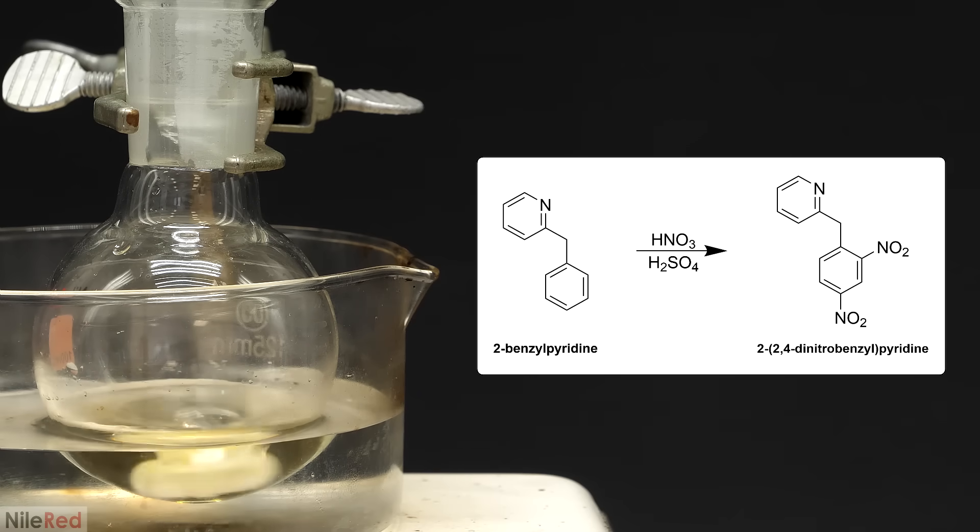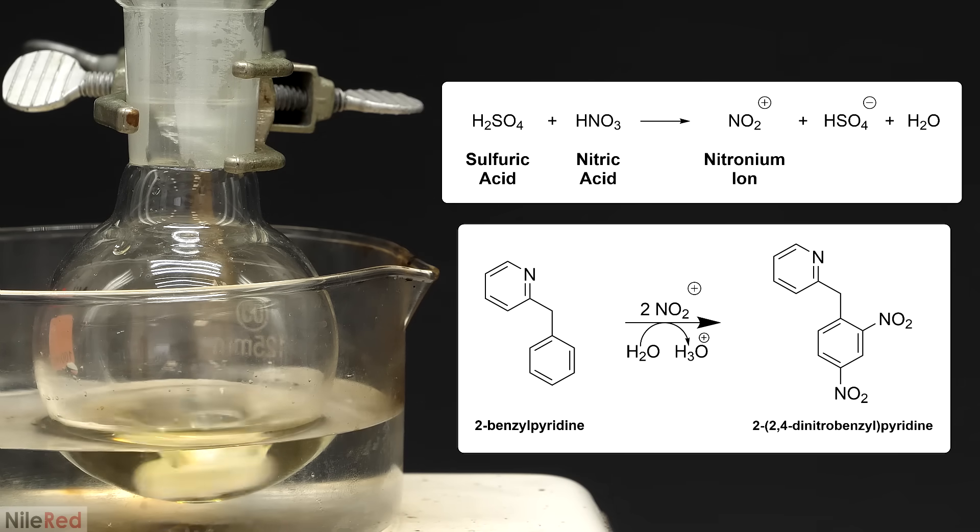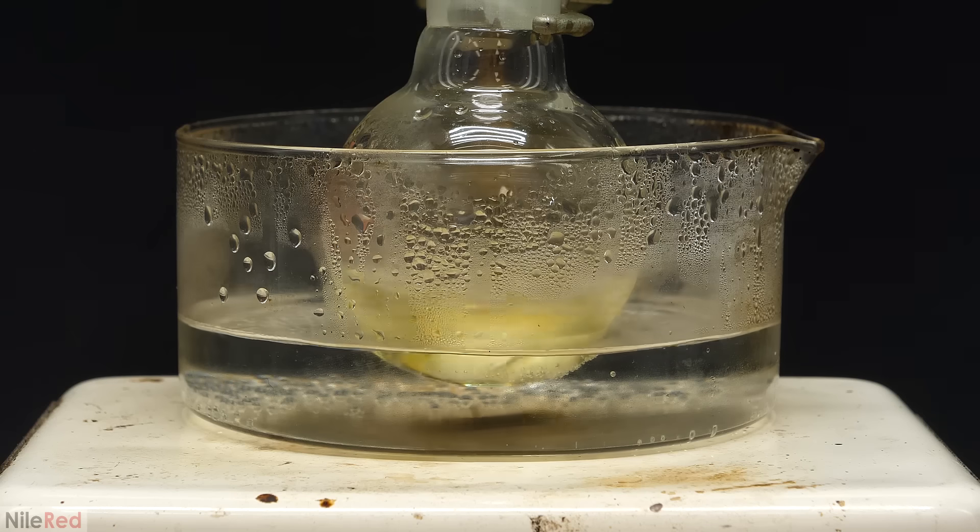What was going on here was a nitration reaction, where 2 nitro groups were being added to the 2-benzalpyridine to make DNBP. In a bit more detail, the first step was a reaction between the sulfuric and nitric acid to make nitronium ions. These were the active nitrating species, and they were attacked by the 2-benzalpyridine. Under these conditions, DNBP was the major product, but I'm sure that to a certain extent other nitrated forms were also made. These just had to be purified out in the workup, and you'll see how I did that.